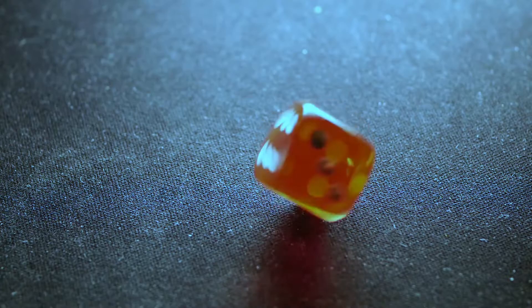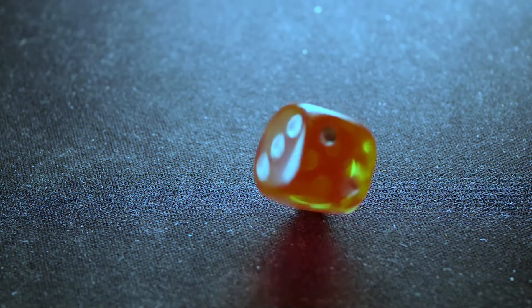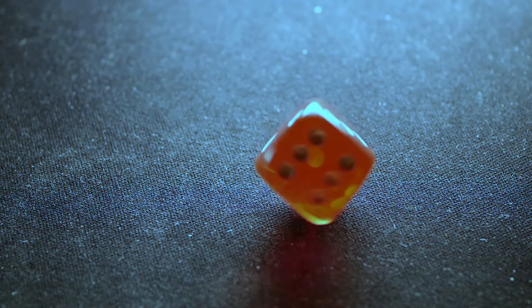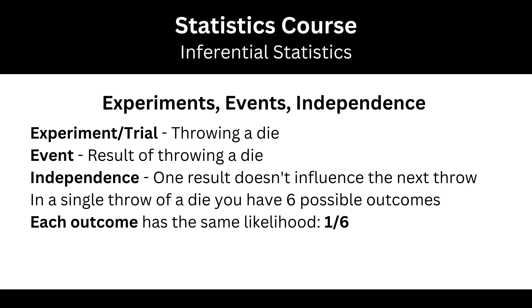A trial or experiment — same thing — is you throwing a die. The event is the result from the trial. You got a 6.